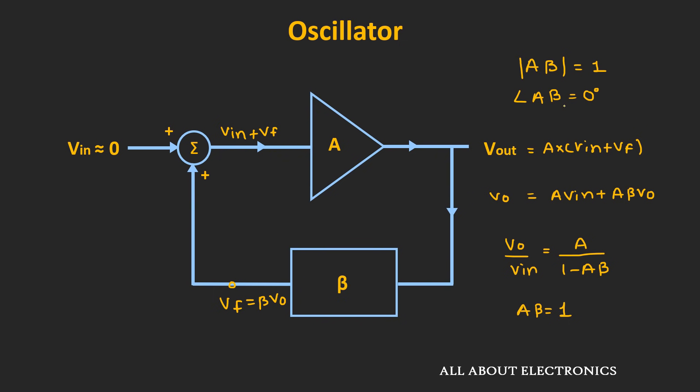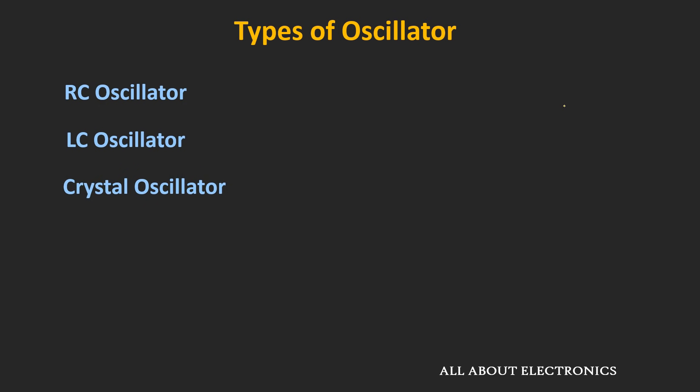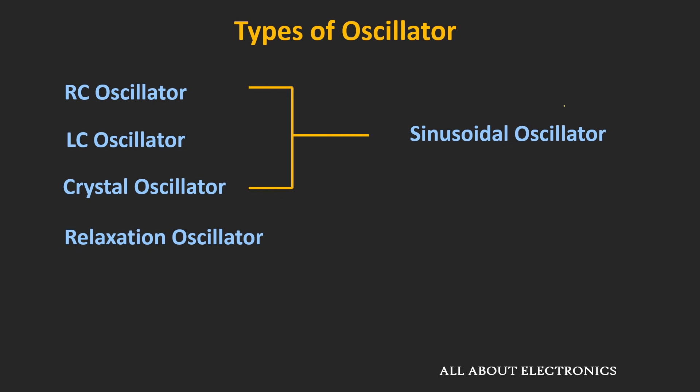In oscillators, the feedback circuit is a frequency selective circuit, which can be made up of RL, RC, or RLC components — and even a quartz crystal can be used for frequency selection. Depending on the type of feedback circuit, the oscillator can be classified as either an RC, LC, or crystal oscillator, and further classified based on the arrangement of components. The oscillators mentioned here are sinusoidal oscillators, also known as harmonic oscillators, because their output is a sine wave. Other oscillators produce different waveforms like square waves and triangular waves, and these are known as relaxation oscillators, which can be built using op-amps or timer ICs like the 555 timer.